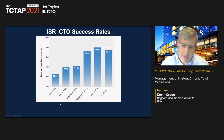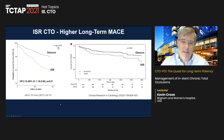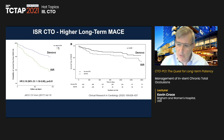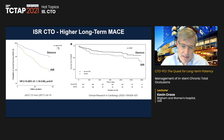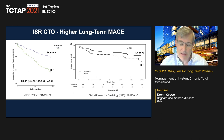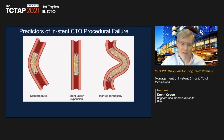High-volume centers adopting the hybrid algorithm, at least in the United States, are achieving those success rates. CTOs from in-stent restenosis actually have worse long-term outcomes compared to de novo CTOs, as shown in two studies including one published in 2020. This mirrors non-CTO PCI data for ISR — ISR patients are at increased risk for MACE compared to patients treated for de novo disease.